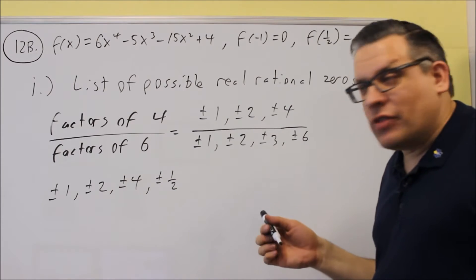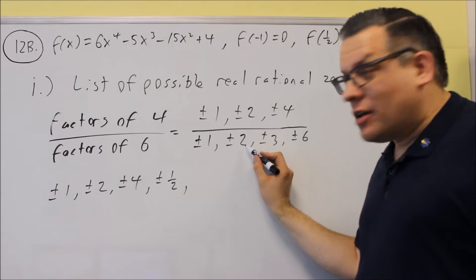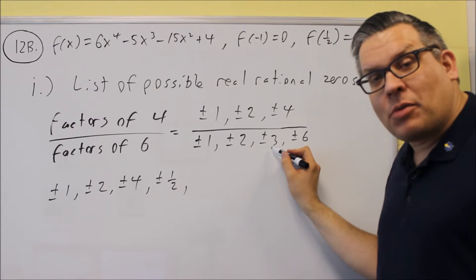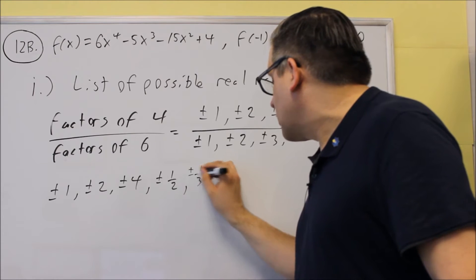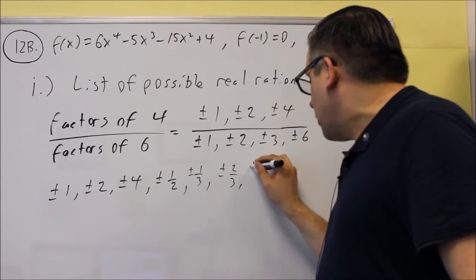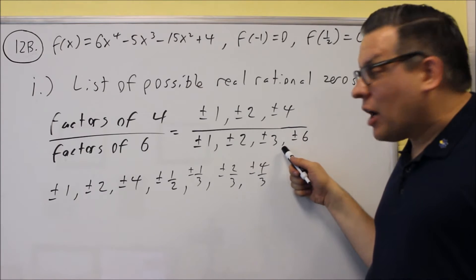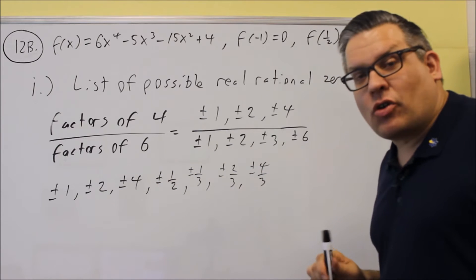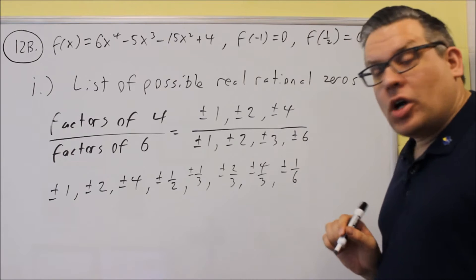If you already have it on the list, you can just leave it. Next, take everything on top divided by three: plus or minus one third, plus or minus two thirds, plus or minus four thirds. Now divide everything by six: if you already have something on this list, don't write it a second time. So plus or minus one sixth.